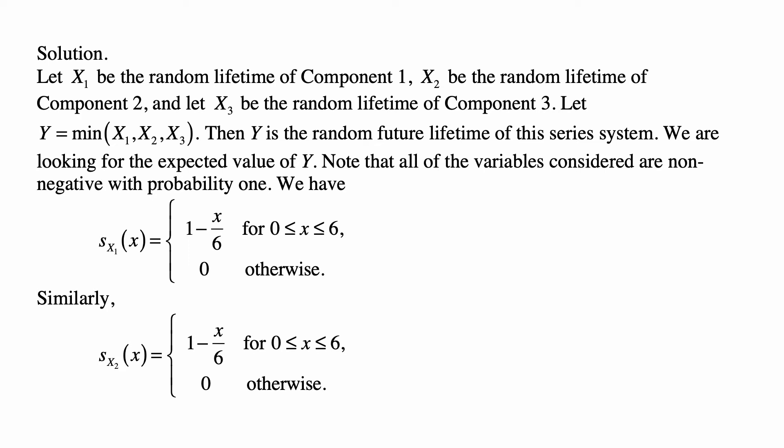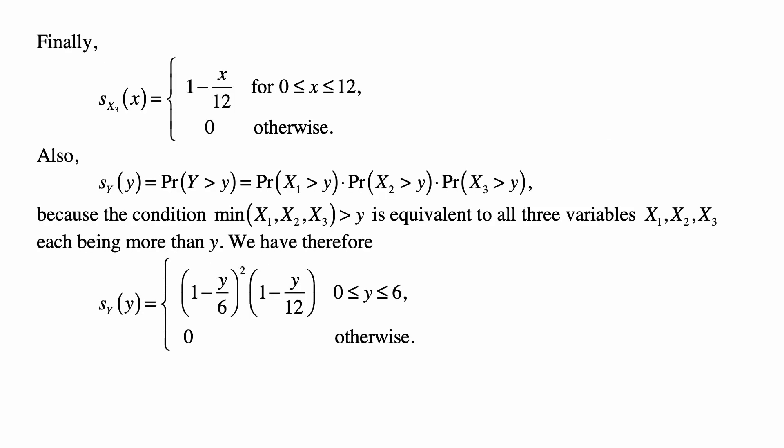The survival function of X1 is 1 minus x over 6 for x between 0 and 6. It's a linear function starting at 1 at the value of 0 and with a value of 0 at x equal to 6. Similarly, s sub X2 of x is 1 minus x over 6 for x between 0 and 6 and 0 otherwise because it's the same distribution as X1. And s sub X3 of x is 1 minus x over 12 for x between 0 and 12 and 0 otherwise.